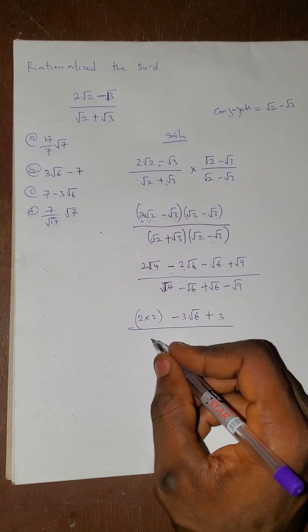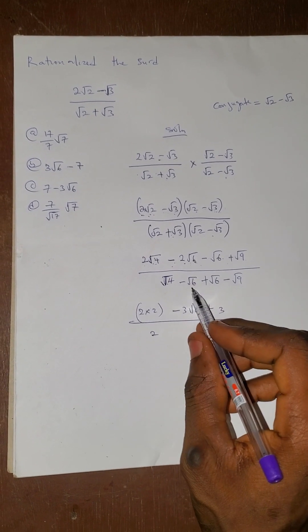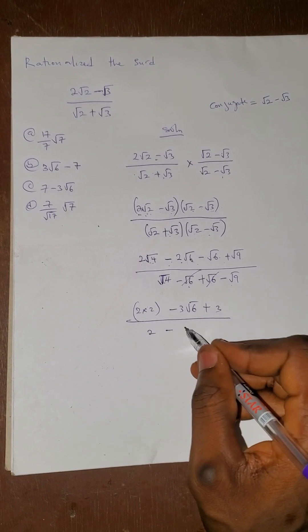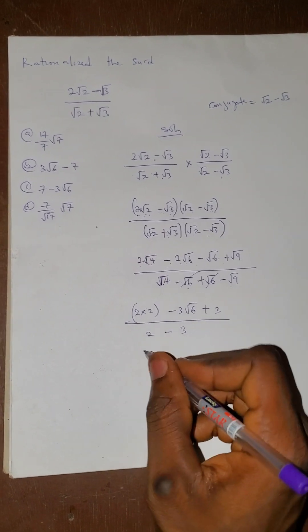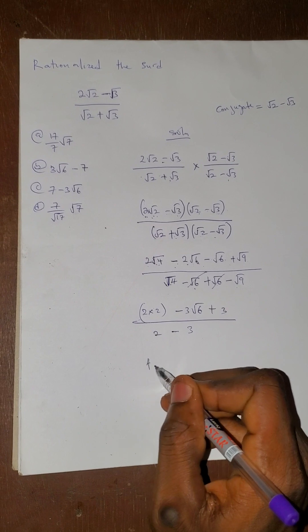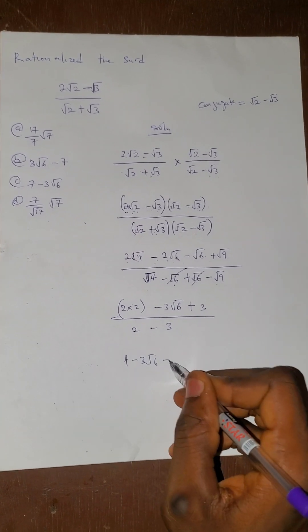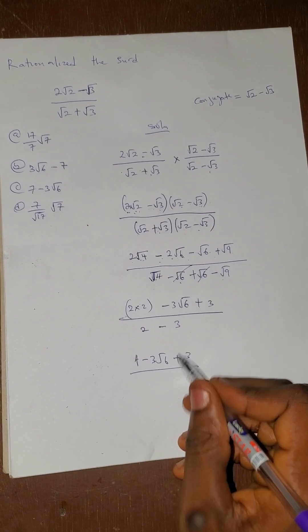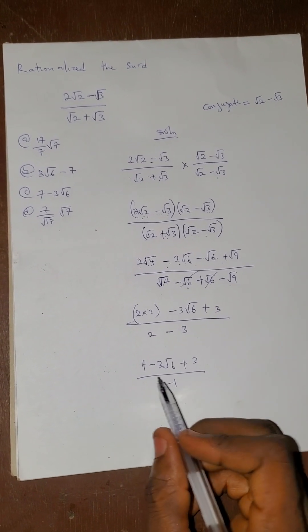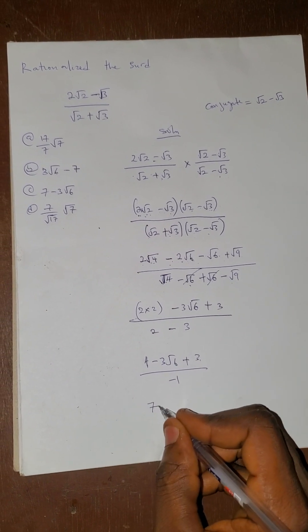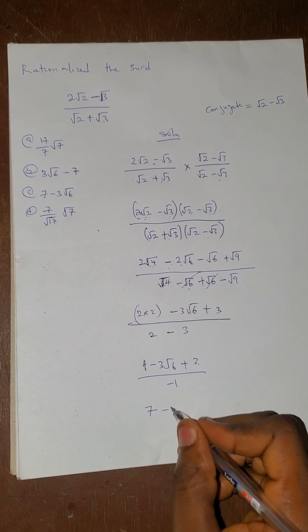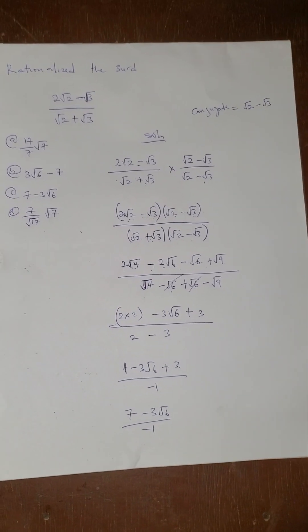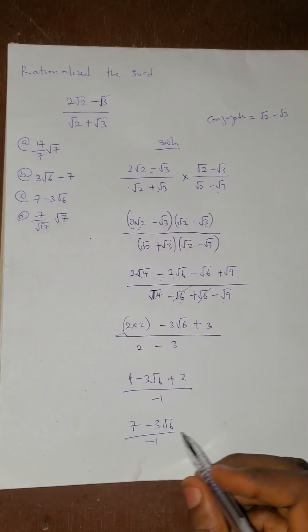For the denominator: √4 is 2, the √6 terms cancel out, and minus √9 is minus 3. So the numerator is 2 times 2 equals 4, plus 3 equals 7, minus 3√6. The denominator is 2 minus 3 equals minus 1.